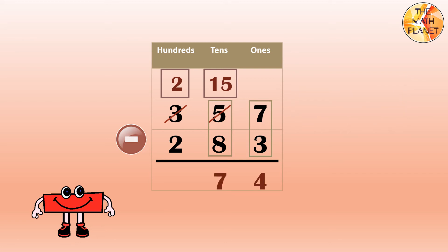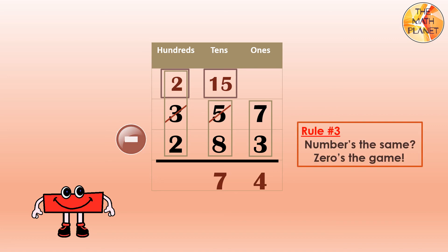Next, we will subtract the hundreds. 2 minus 2. This is rule number 3. Numbers the same, zeros the game, so the difference is 0. So, 357 minus 283 equals 74.